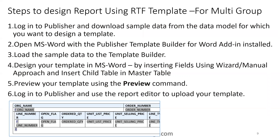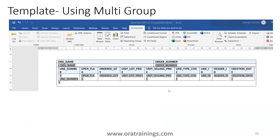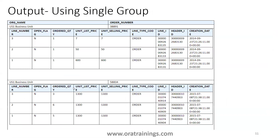Almost all steps are the same, but in step four for the multi-group approach, we insert a child loop inside the parent group. The org name data has one parent table, and inside that we have a child table. The template has one for-loop on top, and inside that table there is another child table. Data-wise and output-wise, both approaches produce the same result.